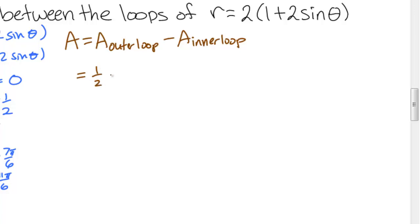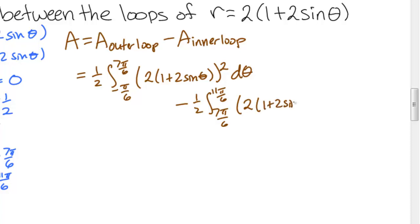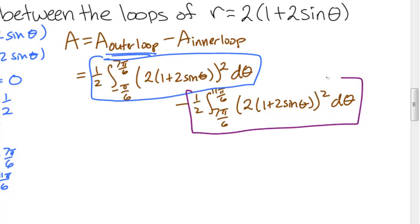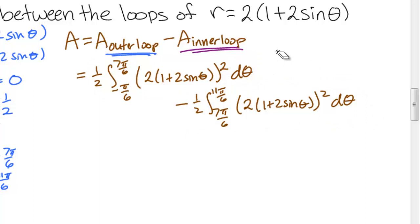For the outer loop, it is 1/2 the integral from negative π over 6 to 7π over 6 of the quantity 2 times the quantity 1 plus 2 sine theta, the whole thing squared, dθ. Then we will subtract 1/2 the integral from 7π over 6 to 11π over 6 of the same integrand, the quantity 2 times the quantity 1 plus 2 sine theta, that whole thing squared, dθ. So the outer loop is this first integral here, and the inner loop is the second integral here. This would be the setup for the problem.